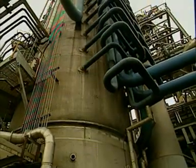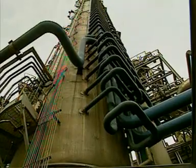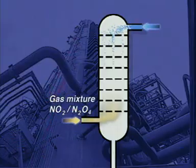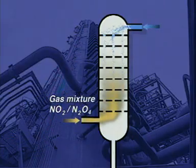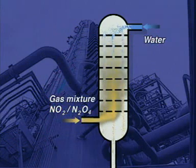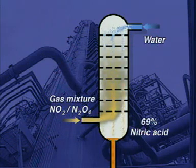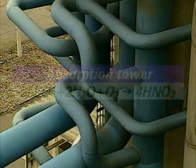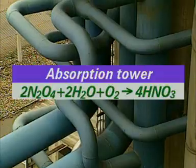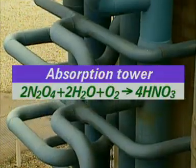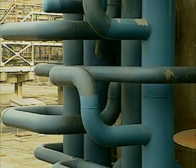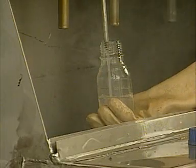The mixture passes to the base of the absorption tower. The gases rise up the tower and through a series of slotted trays. Water runs down the tower. A reaction occurs to produce an approximately 69% solution of nitric acid. The reaction is exothermic — it produces heat. The blue pipes contain water that is used to cool the acid stream in the tower.